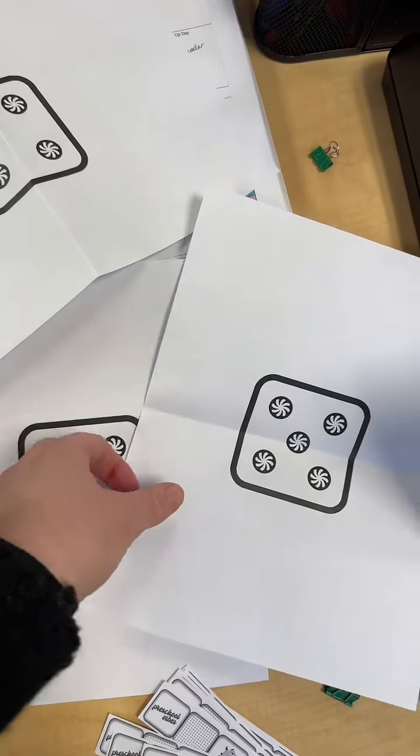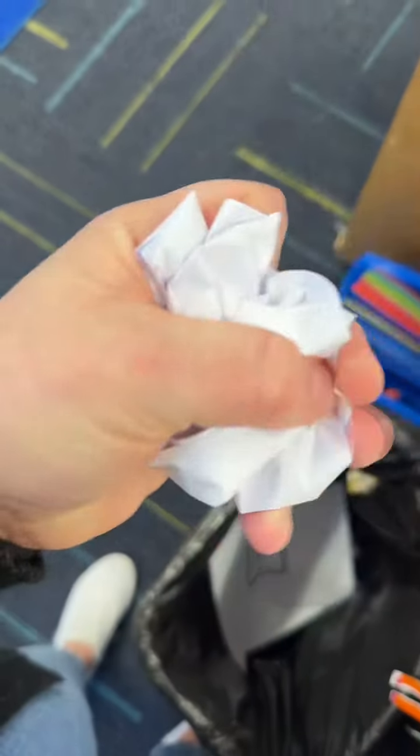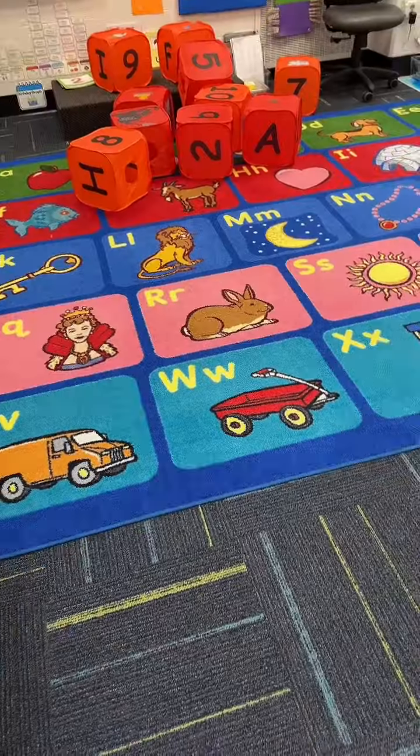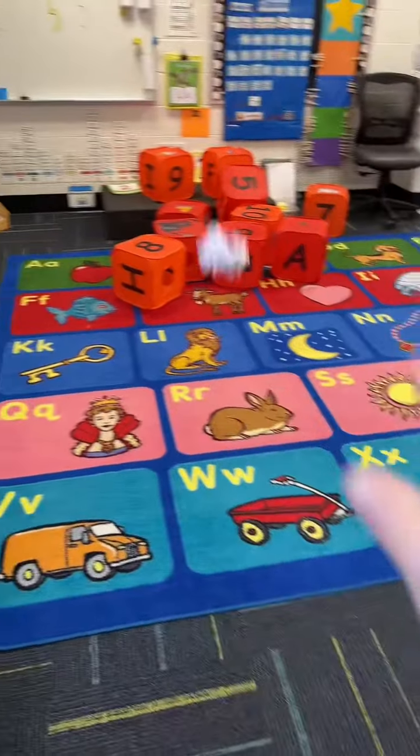Next, we had a snowball fight! Each student got a paper with a dice pattern on it, one through five. We crumpled it up, threw it across the room, and then students ran to find any snowball.